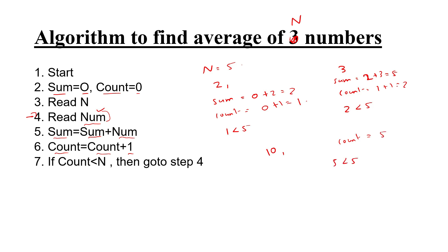Now, the average is equal to total sum divided by N. Then stop here. This is the algorithm.